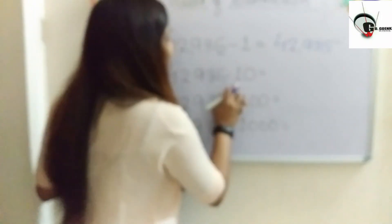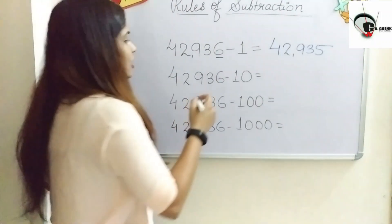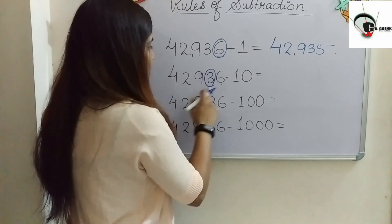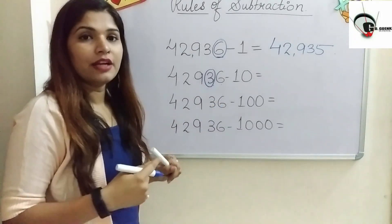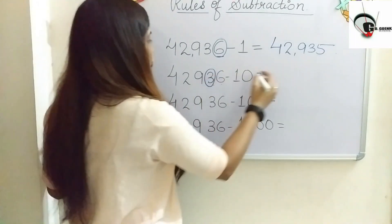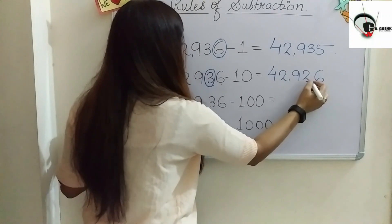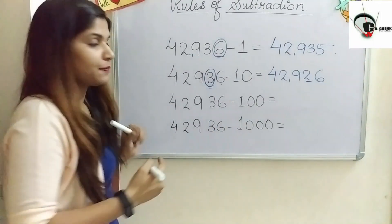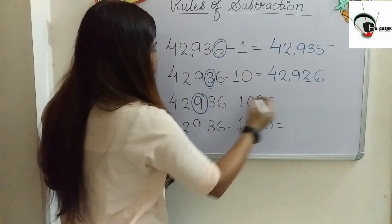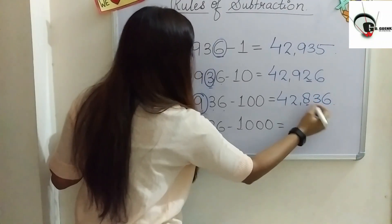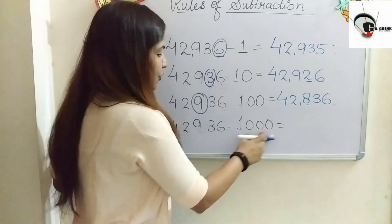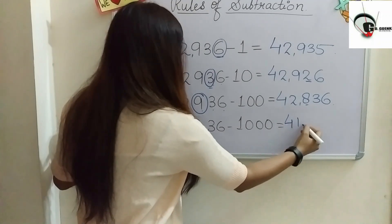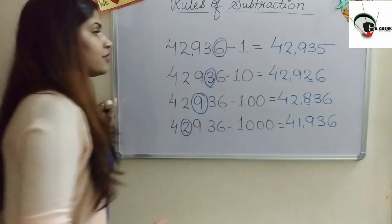When subtracting 10, it affects the tens place. The digit at the tens place in 42,936 is 3, so it decreases by 1, giving us 42,926. When subtracting 100, it affects the hundreds place — the digit 9 decreases by 1, giving 42,836. When subtracting 1000, it affects the thousands place, so we get 41,936.